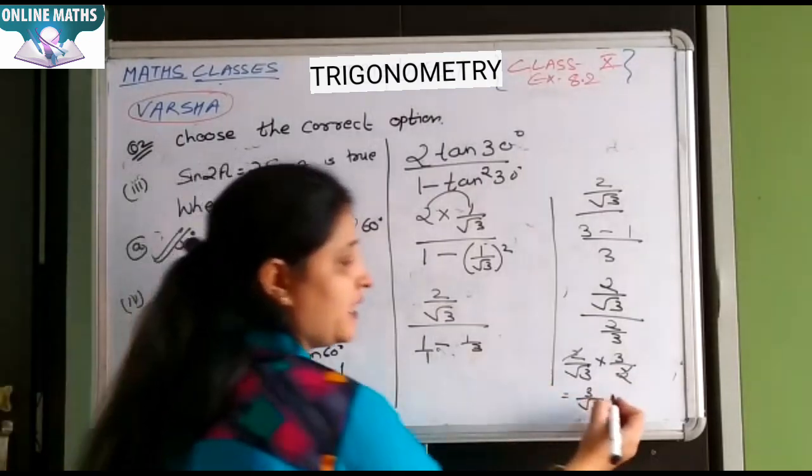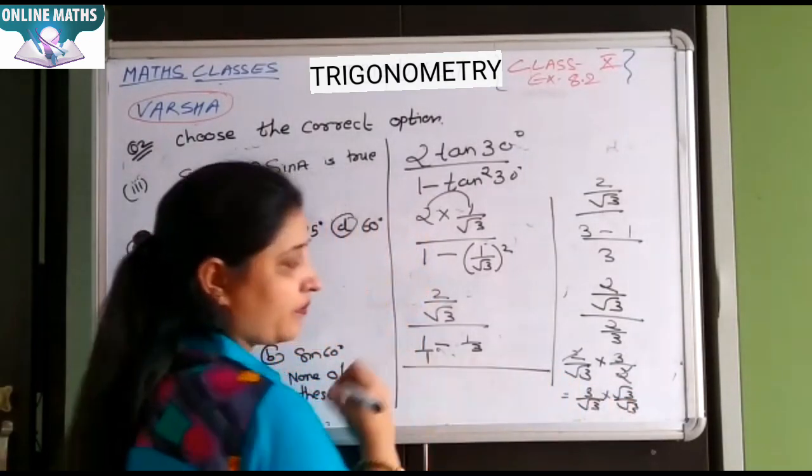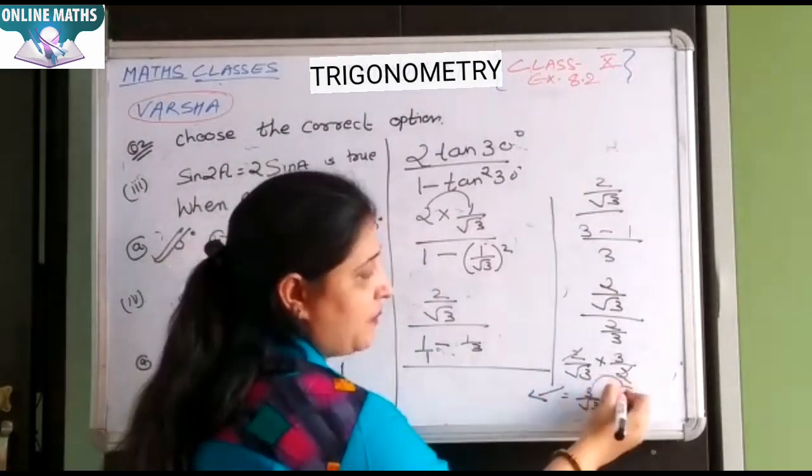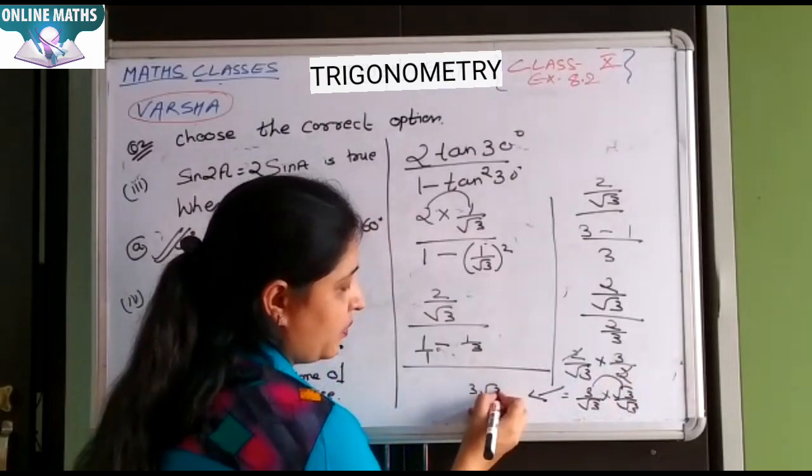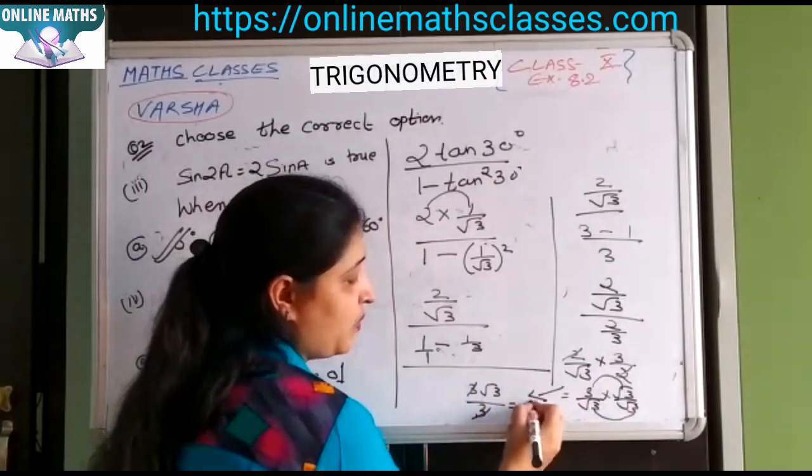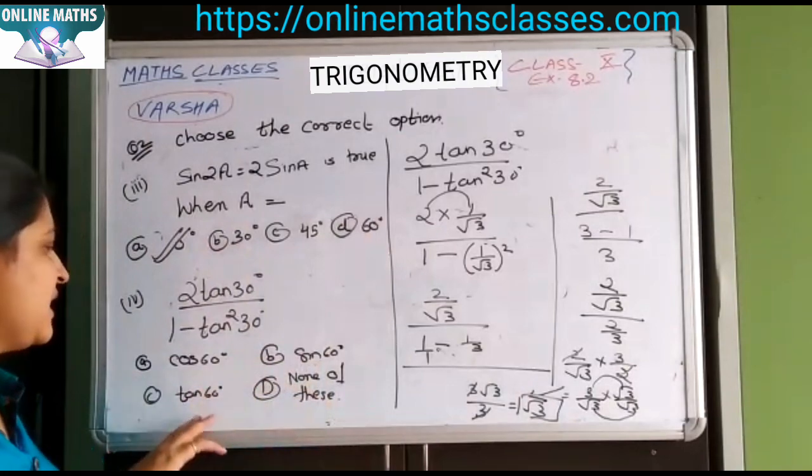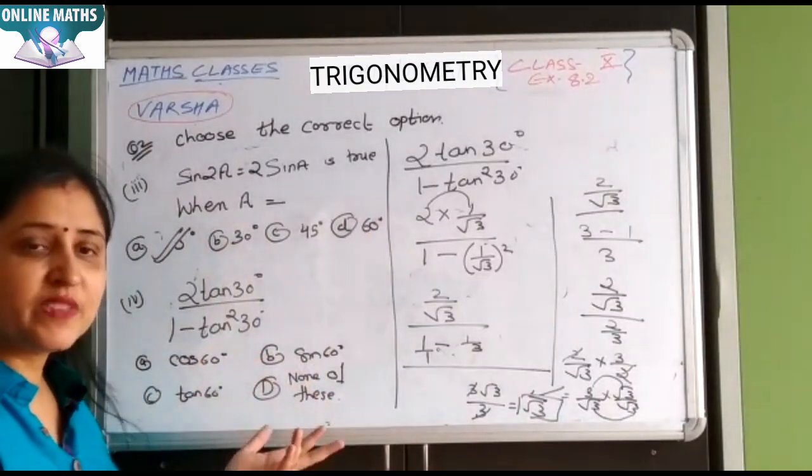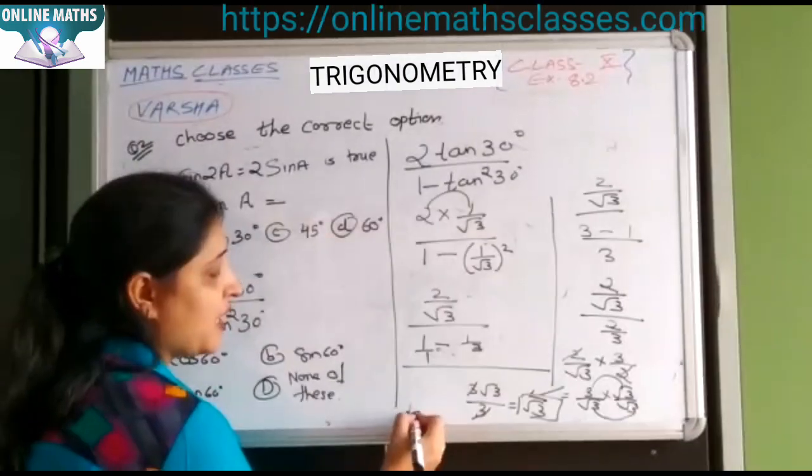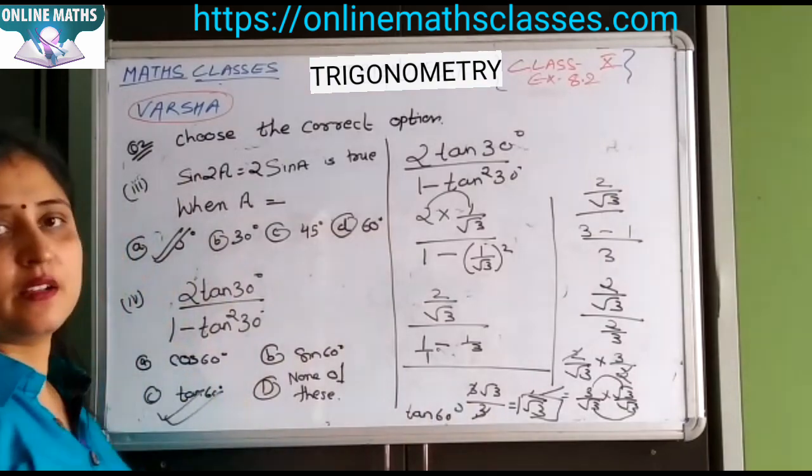You have to rationalize this. Root 3 by root 3. It means multiply 3 under root 3 upon under root 3 into root 3 is 3, 3 cancel. It means answer is root 3. In this, cos 60 value, sin 60 value, root 3. What is root 3? Tan 60 value is root 3. It means your correct option is tan 60. Thank you.